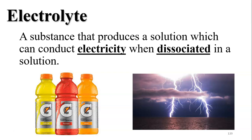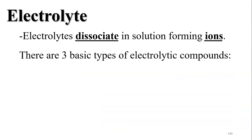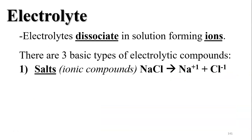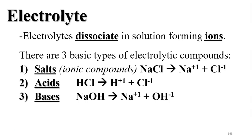An electrolyte is something that produces electricity when it's in an aqueous solution. When ionic compounds, acids, and bases are dissolved in water, they dissociate — they come apart and conduct electricity. That's why we call them electrolytes. Electrolytes dissociate in solution and form ions. Salts like sodium chloride dissociate into sodium and chlorine ions, acids like hydrochloric acid dissociate into hydrogen and chlorine ions, and bases dissociate into sodium and hydroxide ions. Those solutions conduct electricity.